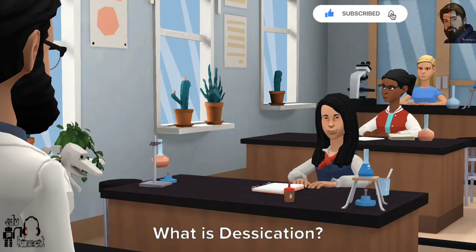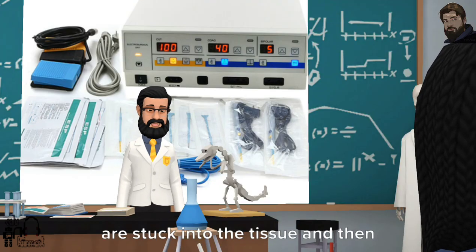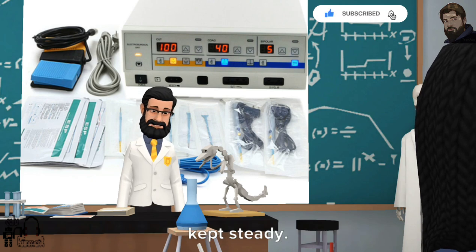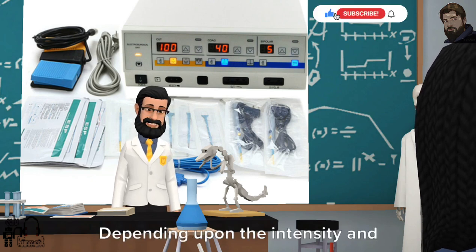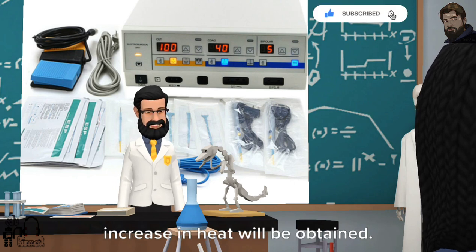What is desiccation? In desiccation, needlepoint electrodes are stuck into the tissue and then kept steady. Depending upon the intensity and duration of the current, a high local increase in heat will be obtained. The tissue changes due to drying and limited coagulation.